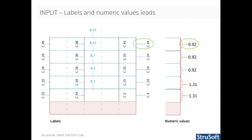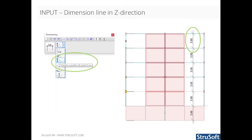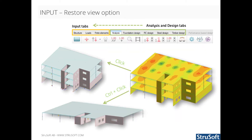In FemDesign 17, if a numeric value or a label is moved away from the referred point, a leading line will be displayed. It is now possible to easily add a dimension in the z-axis without having to change the user coordinate system. Now, if the control button is pressed when returning from the analysis and design tabs to the input ones, the input view is restored.